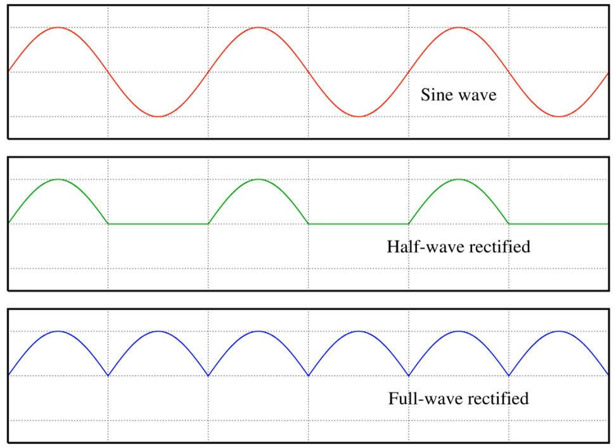If the group velocity Vg is wavelength-independent, this equation can be simplified as U(x,t) = A(x − Vgt) sin(kx − ωt + φ). Showing that the envelope moves with the group velocity and retains its shape. Otherwise, in cases where the group velocity varies with wavelength, the pulse shape changes in a manner often described using an envelope equation.